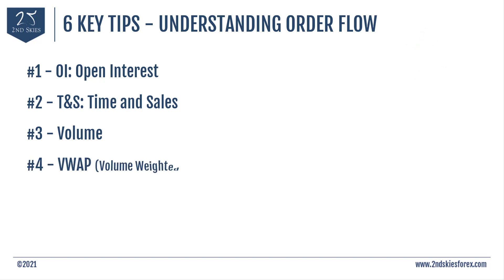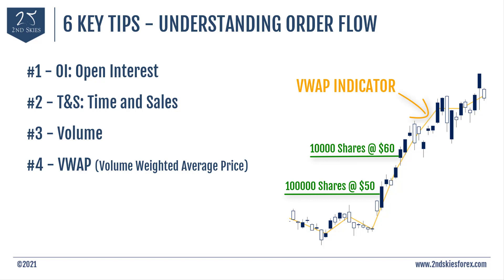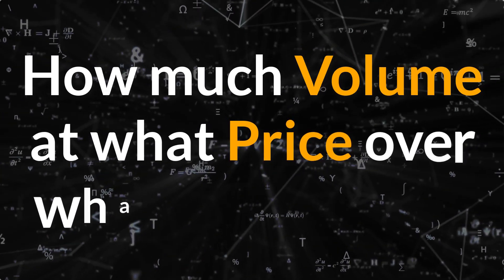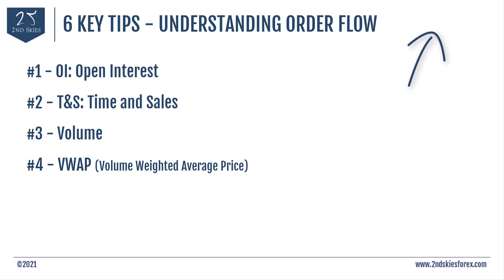Number four is VWAP — volume weighted average price. The VWAP indicator gives you a sense of the dominant order flow for that session or anchor period. For example, if one trader buys 10,000 shares of XYZ at $60, and yet another buyer comes in with 100,000 shares at $50, that tells you there's strong buying pressure at $50 — more than at $60. VWAP shows you how much volume is coming in at a price over a particular period, giving insight into strength, direction, and momentum. We also have a video on how to read the VWAP indicator — click the link above or check the description.